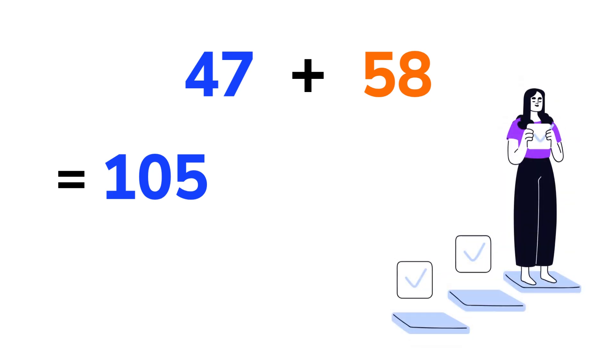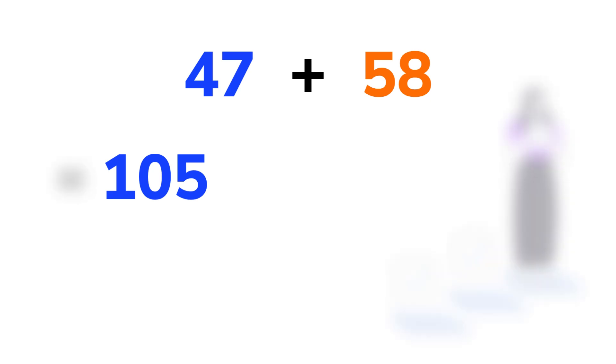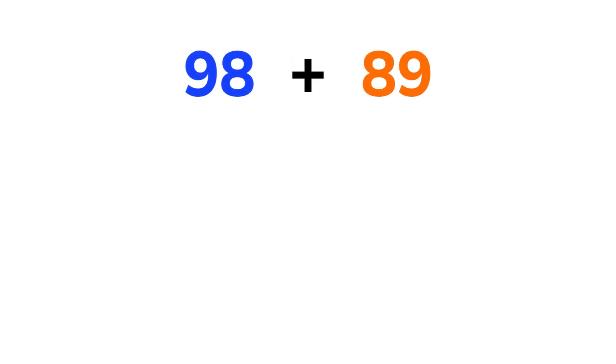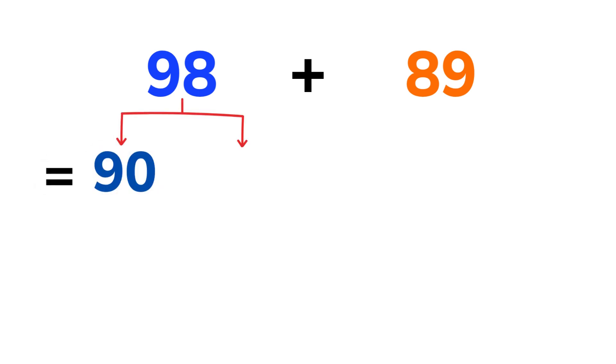Just by taking it one small step at a time. Now try another one. 98 plus 89. Just like before, let's break both numbers into tens and ones. 98 is made of 90 tens and 8 ones.